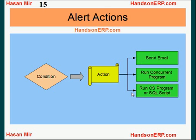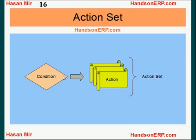The most common option is the notification option — you want to be notified when a certain condition is met. When a condition is met, will only one action take place? You define your action and then you define an action set. An action set could contain one or more actions, meaning multiple actions could be launched when a condition is met. For example, you can make the system run three different concurrent programs and send out three different emails when a condition is met.